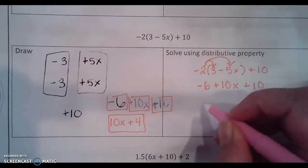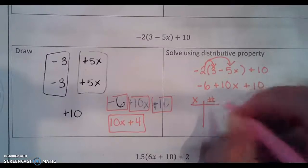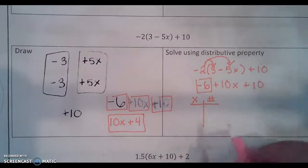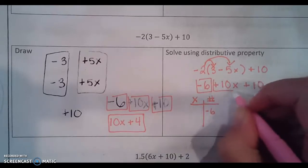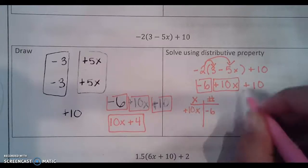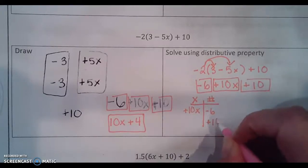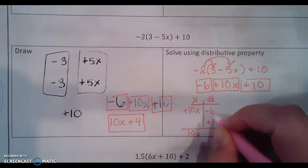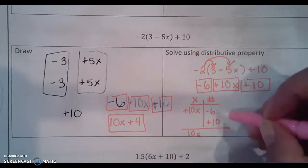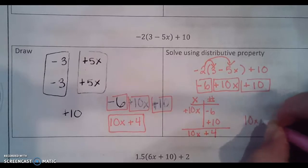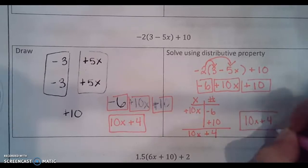And then we like to do a last name chart. We have our x's and we have our numbers. Remember always take the sign. So negative 6. Positive 10x. And positive 10. When I add this up I get 10x. Negative 6 plus 10. Different sign subtract. So I get 4. 10x plus 4. Great.